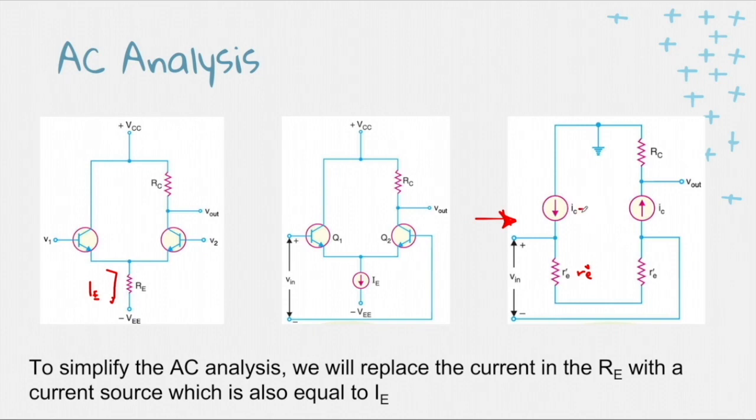IC is the beta IB current source that is generated internally on the transistor. That is part of the DC to AC conversion of the BJT.